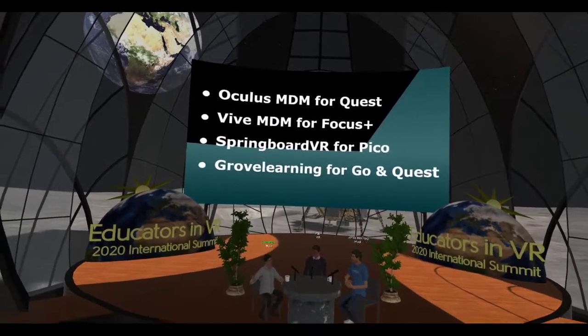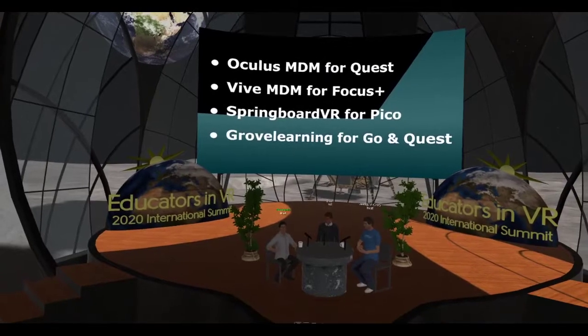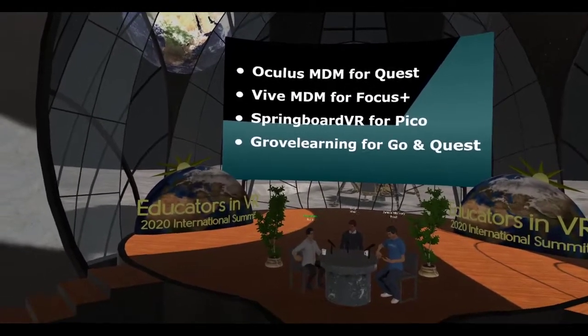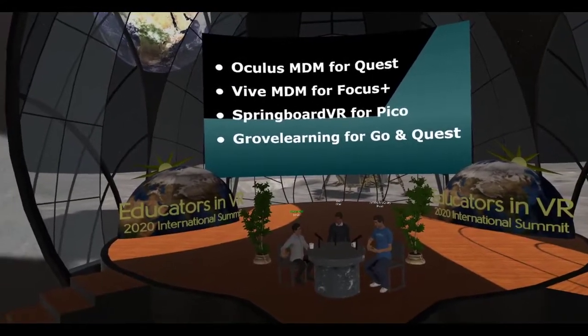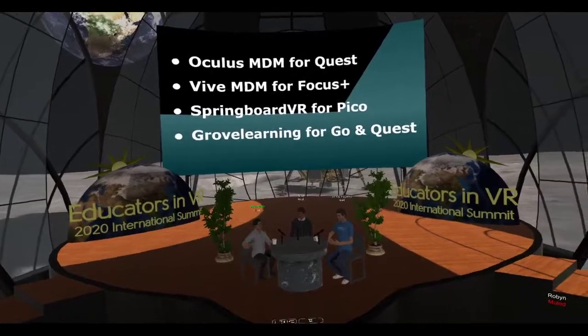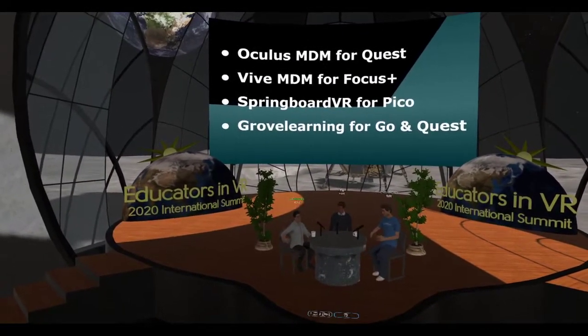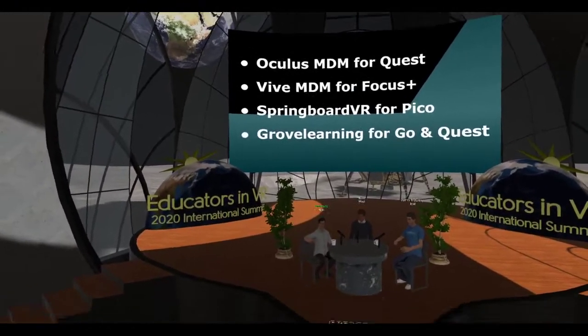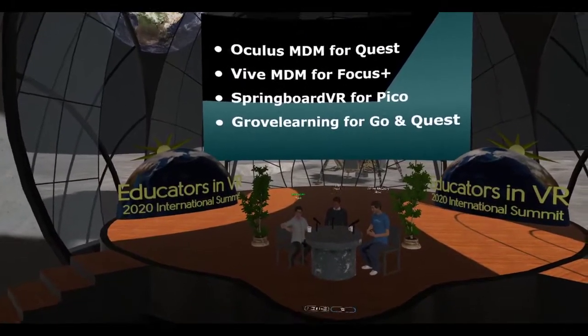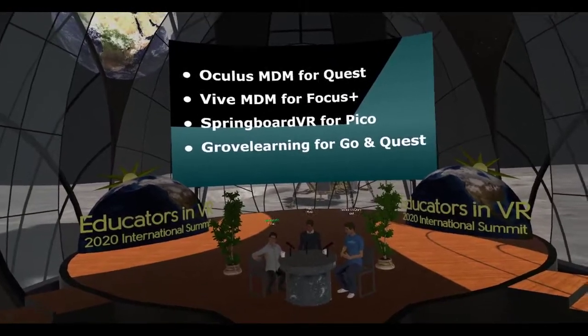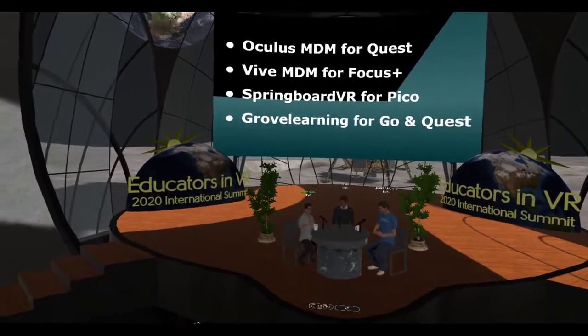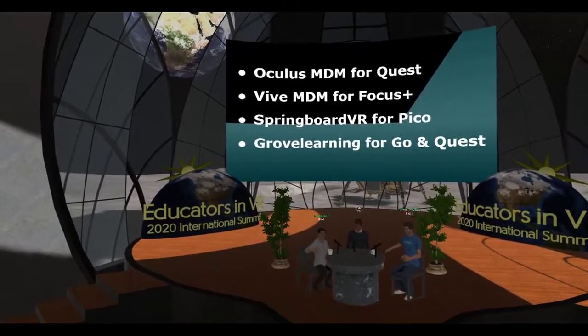Going back to the battle between Android and iOS in a school setting: two or three years ago, we were most likely to choose iOS because the software ecosystem was diverse and huge compared to Android — even though Android tablets were $150 versus $500 for an iPad. Fast forward to today, as schools try to decide between Oculus, Vive, Pico, or others, we don't have enough time to cover the distribution of software across each hardware manufacturer's separate ecosystem.